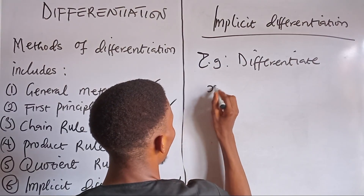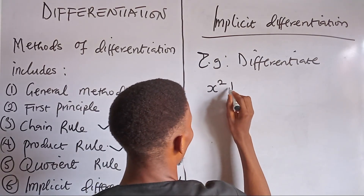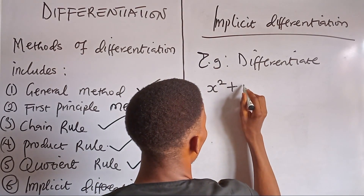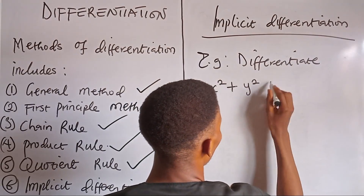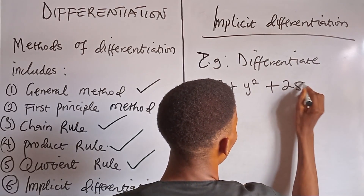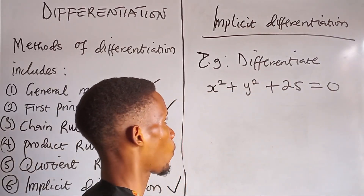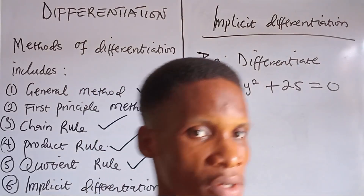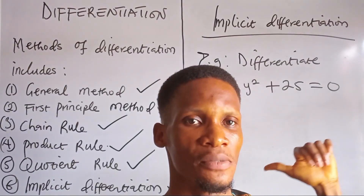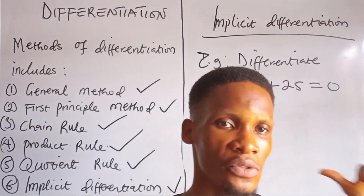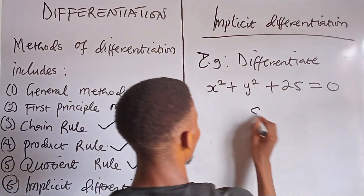So the example we want to differentiate is: x squared plus y squared plus 25 equals 0. How do you differentiate this? This is an implicit function — it falls under the method we are going to use to differentiate. So what you do now is, say solution.